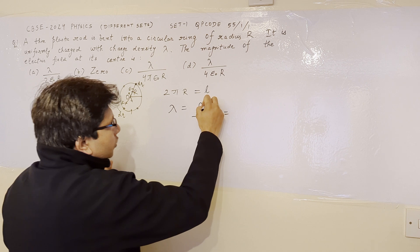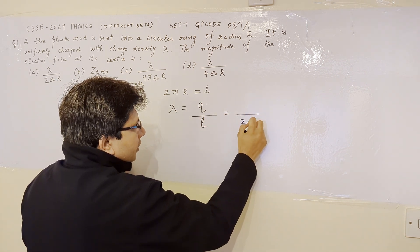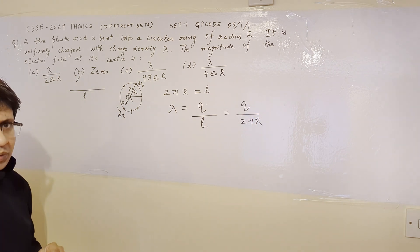So we can say that suppose this is q and this is l. l is equal to 2πr. So we can say that lambda is equal to q upon 2πr.